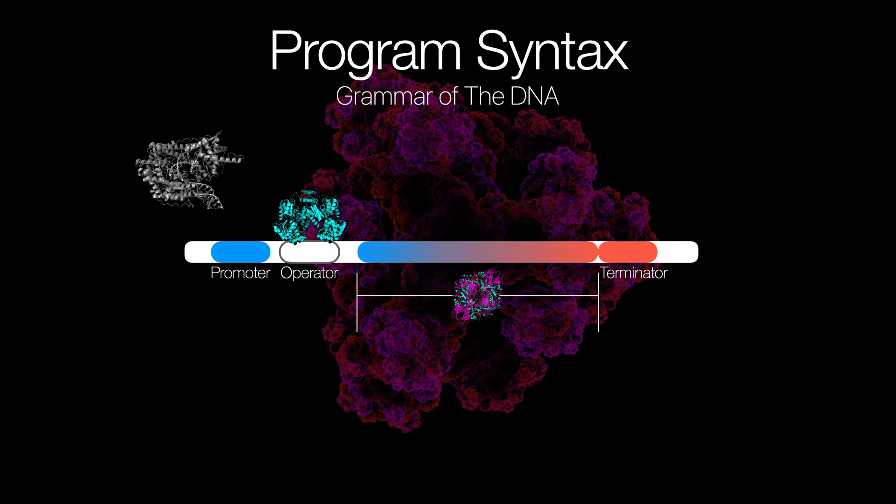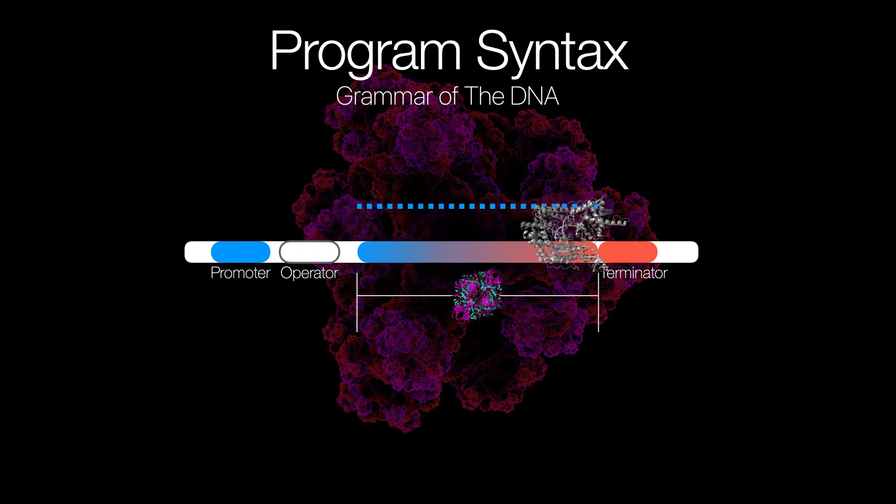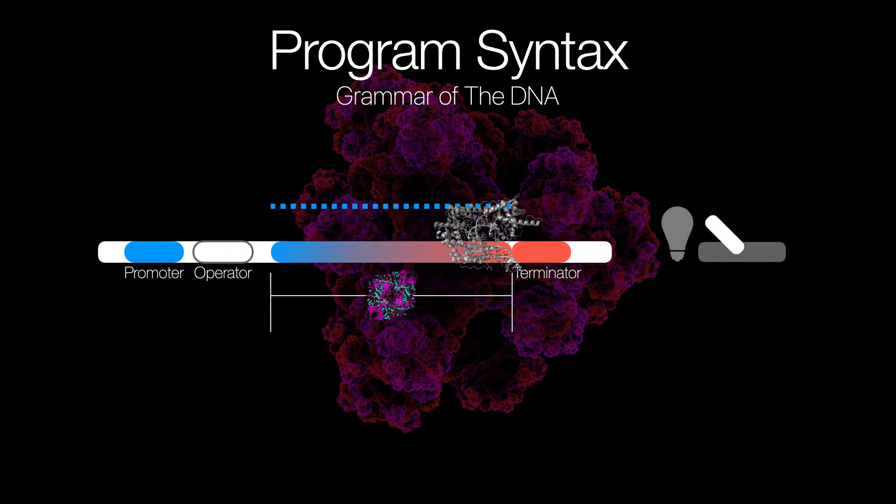But if you have, say, something like lactose present, the lactose binds to the protein and lifts it off of the sequence. And transcription will just continue as usual. In effect, it's like having a switch. If there's lactose, then transcription is on. But if there's none, then transcription is off.